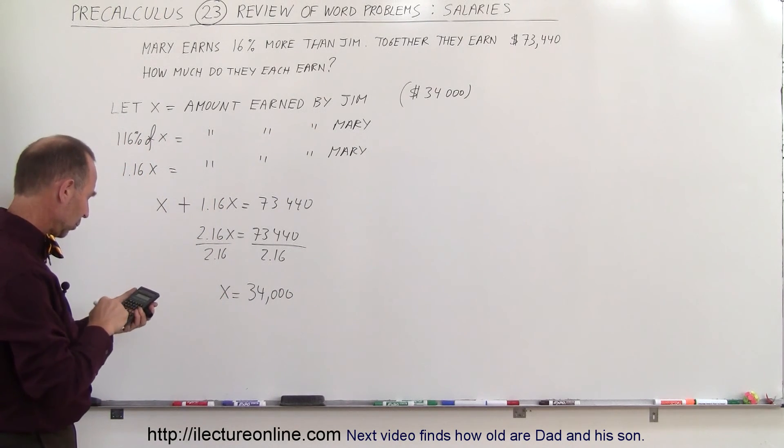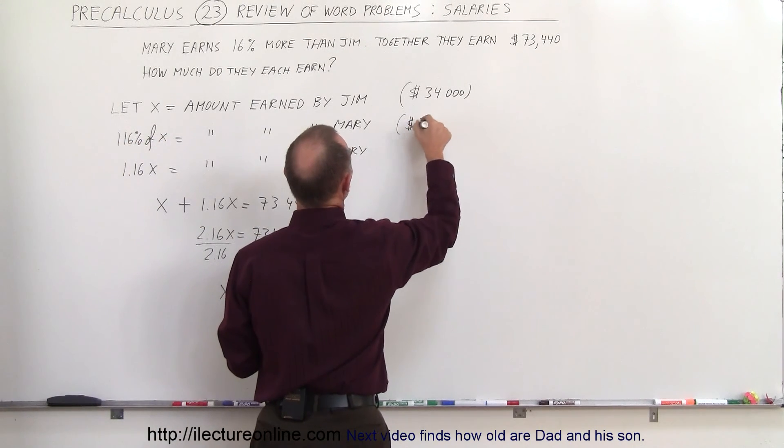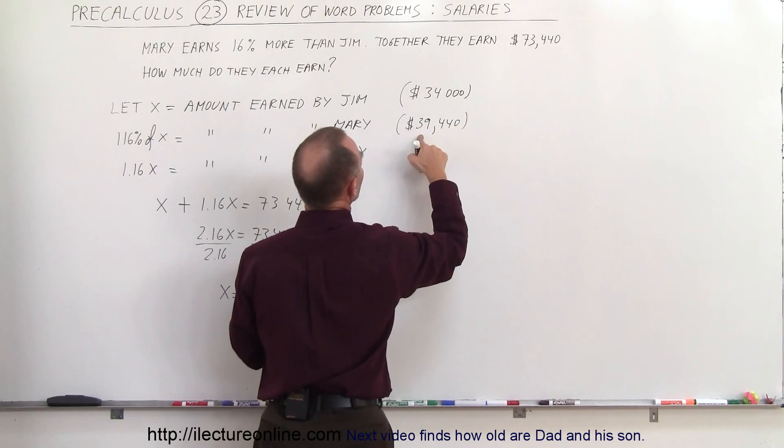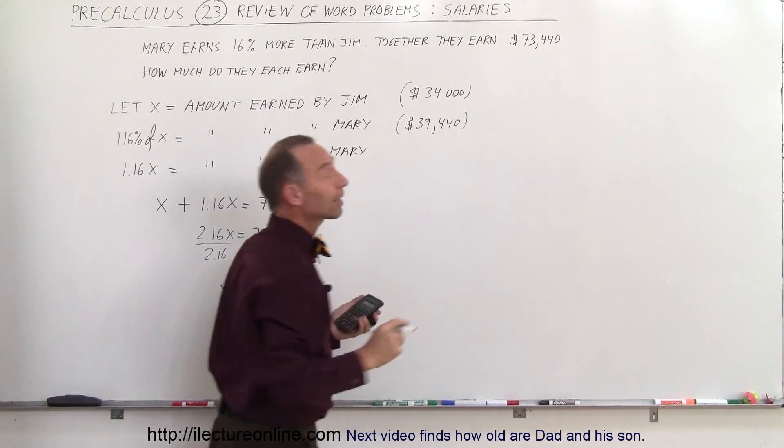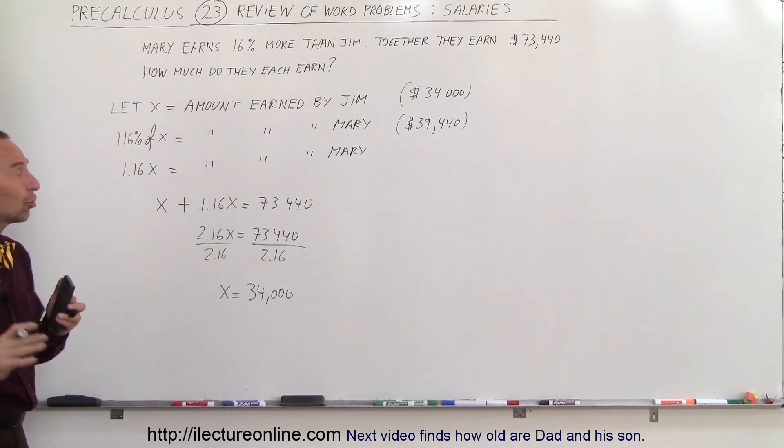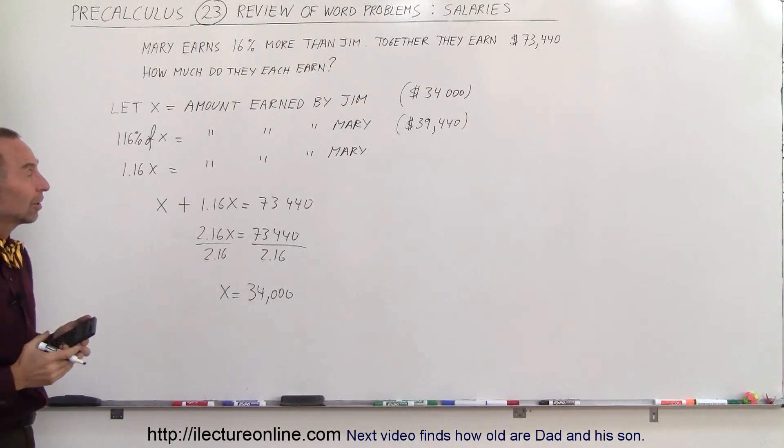So we take that times 1.16 equals $39,440 and if we add the two together, indeed we get the correct amount. So that looks correct, and that's how we do a problem like that. Always make sure we clearly define what x represents, the rest of the problem seems a lot easier that way.